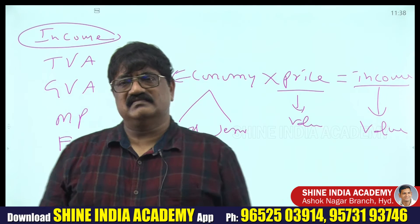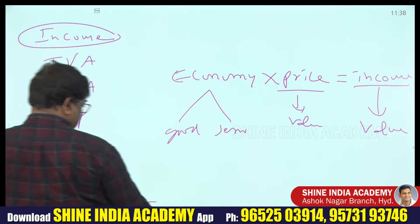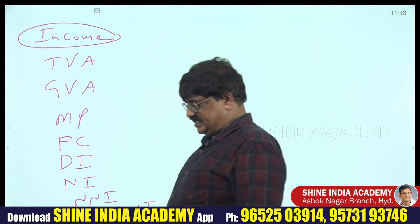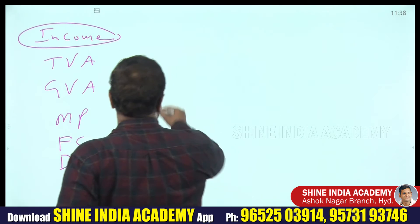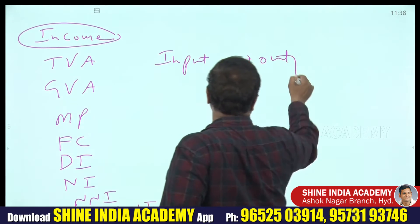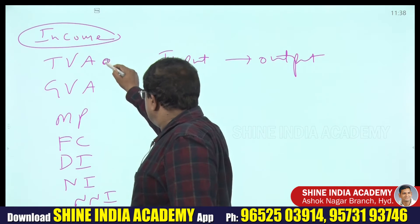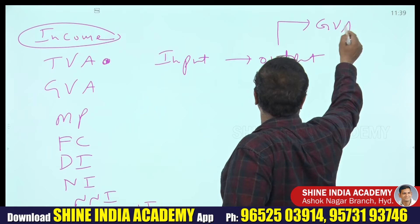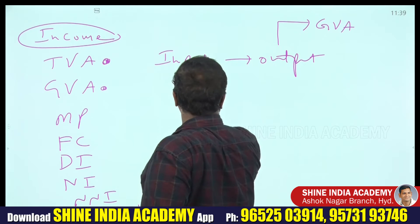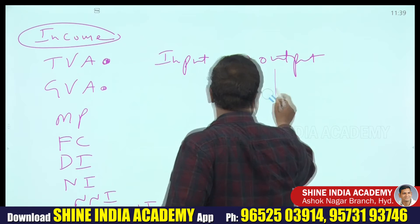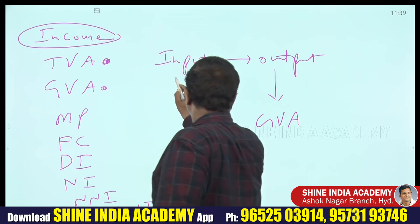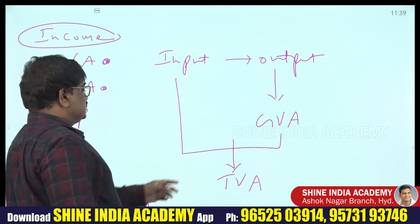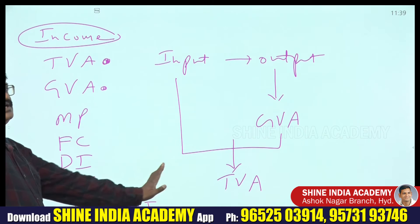TVA (Total Value Added) means you consider not only the final output, but also the input. If you take only output, the value is GVA (Gross Value Added). If you consider input also, it becomes TVA. As shown earlier, GVA = 1000 rupees and TVA = 3100 rupees. NSO should not take TVA — only GVA.